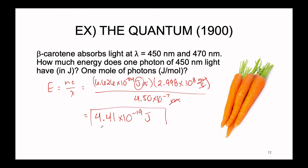We can already see this is a very, very tiny unit of energy. If you're critically evaluating your answer and think it seems too small — remember, this is the energy of one single photon, one tiny little photon. We're on the quantum scale where masses are very small, and energies are also going to be very small. A magnitude of 10 to the negative 19 is perfectly acceptable for the amount of energy a single tiny particle is going to have.